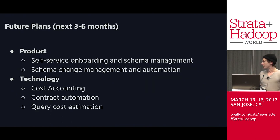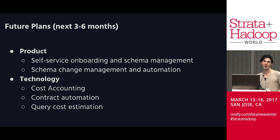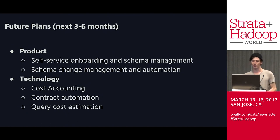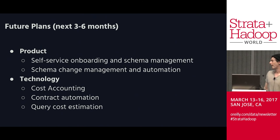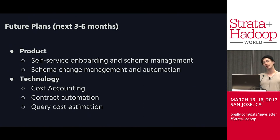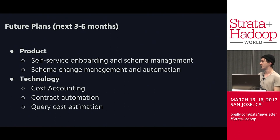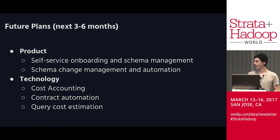Some things we're working on next: self-service onboarding and schema management — the operational burden of a system like this is one of the larger costs. Schema change management and automation becomes a huge pain when running five to ten different environments. We also want to build out cost accounting to understand which users are costing large amounts of computational or storage resource utilization, automation around contracts to detect which queries are run often enough that it's worth pre-filling the cache, and better query cost estimation for rejecting bad queries.